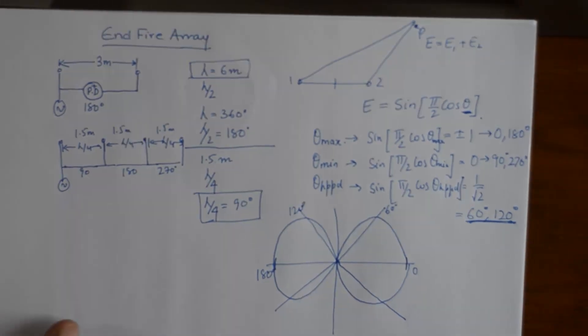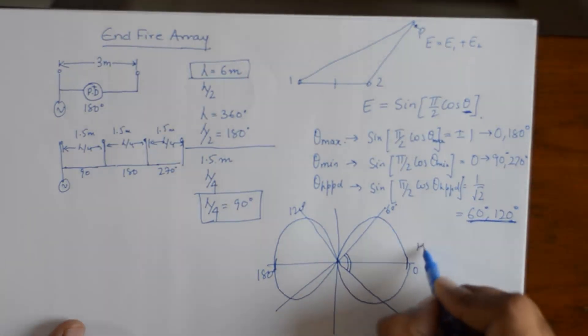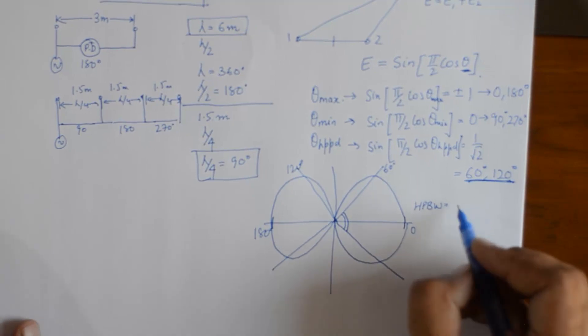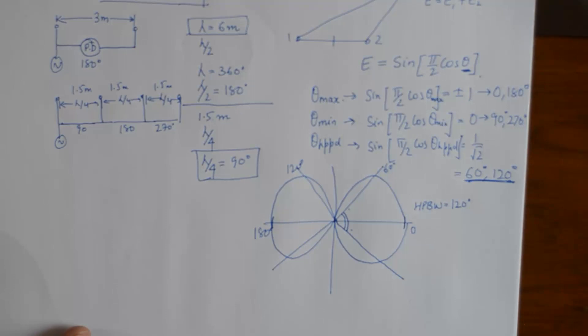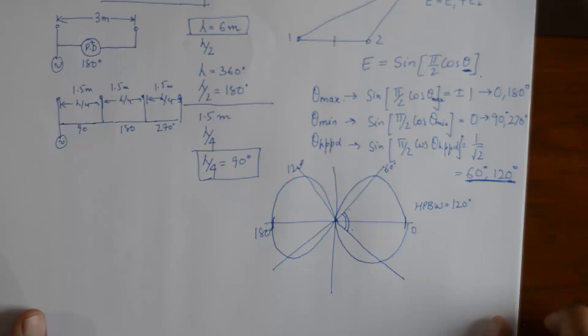Now you could see that the half power beam width is equivalent to 60 plus 60, 120 degrees. Whereas in case of broadside array it was 30 plus 30 which is equivalent to 90 degrees. So you could say that endfire array is more omnidirectional as compared to broadside array, or broadside array has more directivity as compared to endfire array.